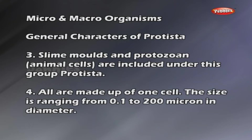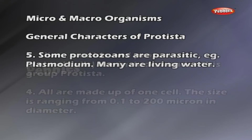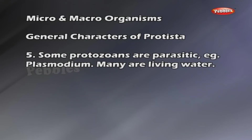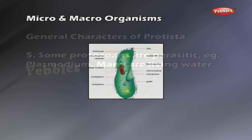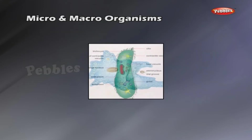Protista are all made up of one cell. The size ranges from 0.1 to 200 microns in diameter. Some protozoans are parasitic — for example, Plasmodium. Many live in water — for example, Amoeba and Paramecium.